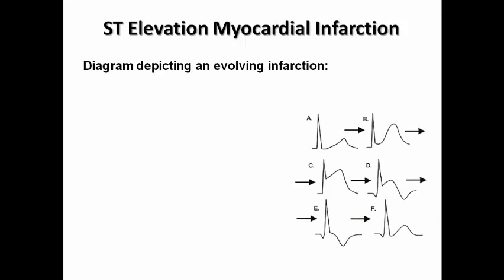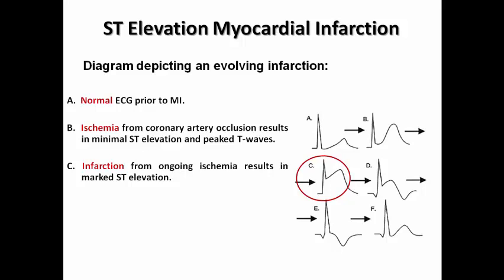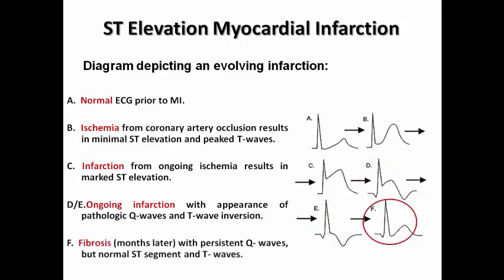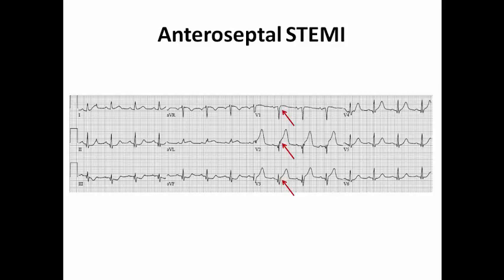There are evolving ECG changes in STEMI. Initially the ECG is normal, then the patient develops ischemia due to coronary artery occlusion, with minimal ST elevation and hyperacute T waves — the hyperacute T wave may even precede the ST elevation. Then frank significant ST elevation develops. If not reperfused in time, pathological Q waves and T wave inversion develop. If reperfusion is missed entirely, persistent Q waves remain while the ST segment and T wave return toward normal. For example, this ECG shows ST elevation from V1 to V3 — anteroseptal STEMI.